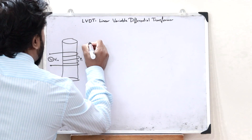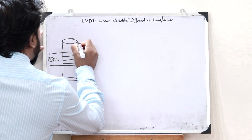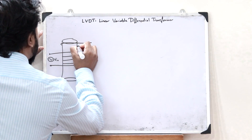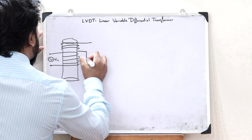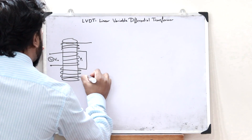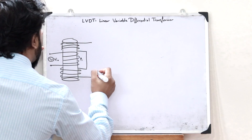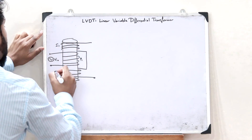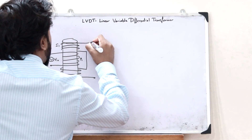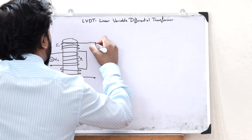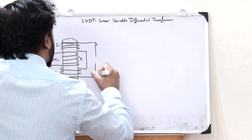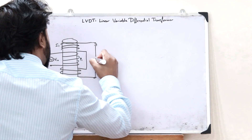We now connect two secondary windings — let this be S1 and let this be S2. The output voltage Vout is obtained across these secondary windings.